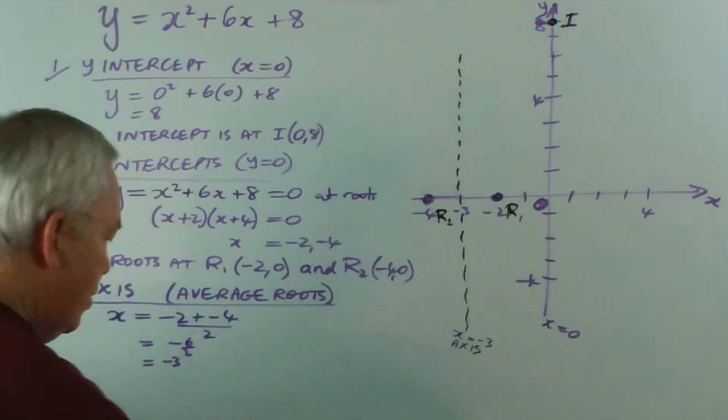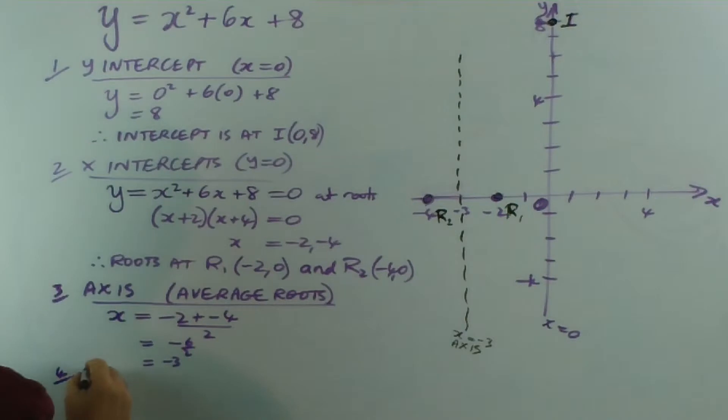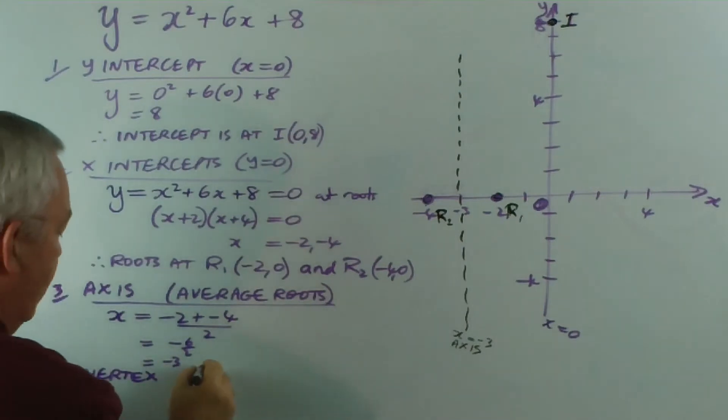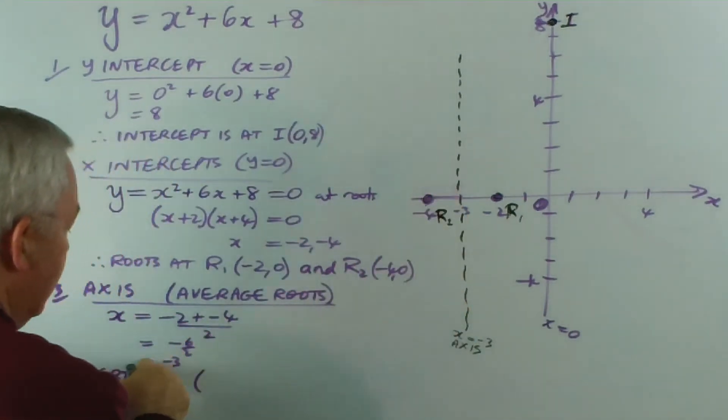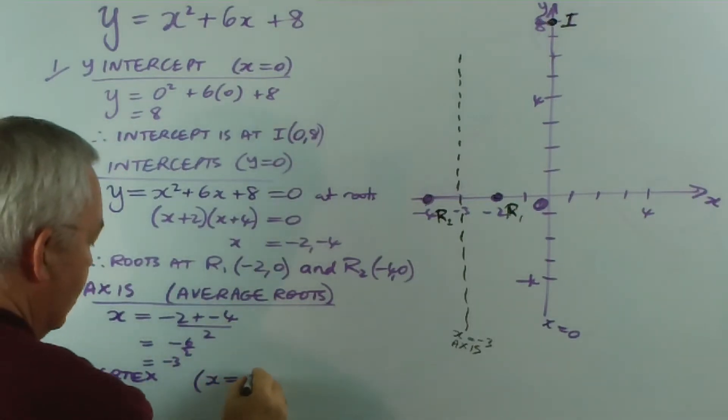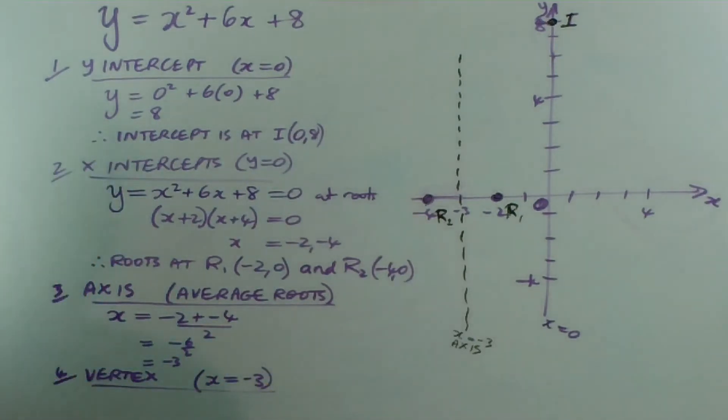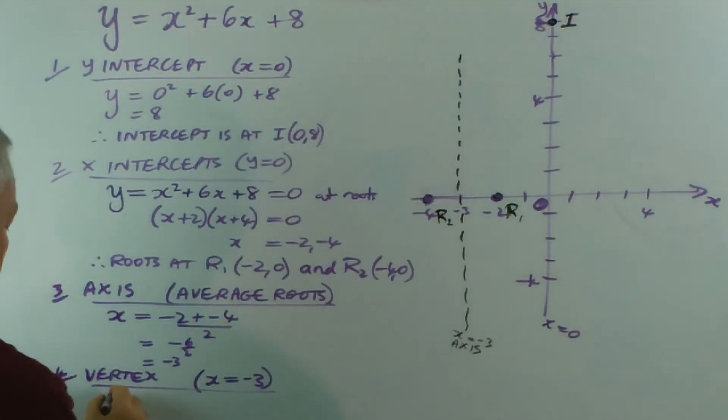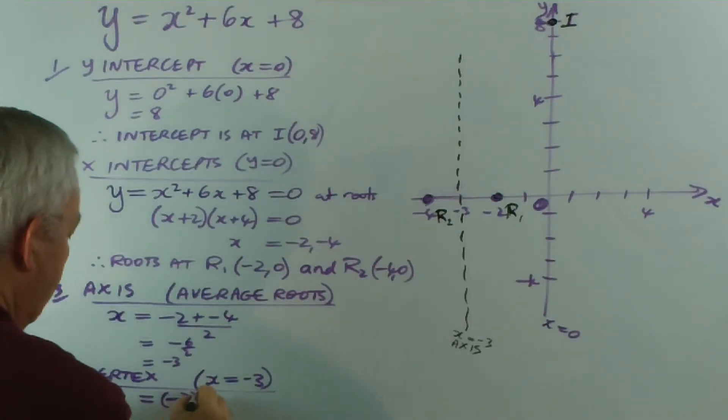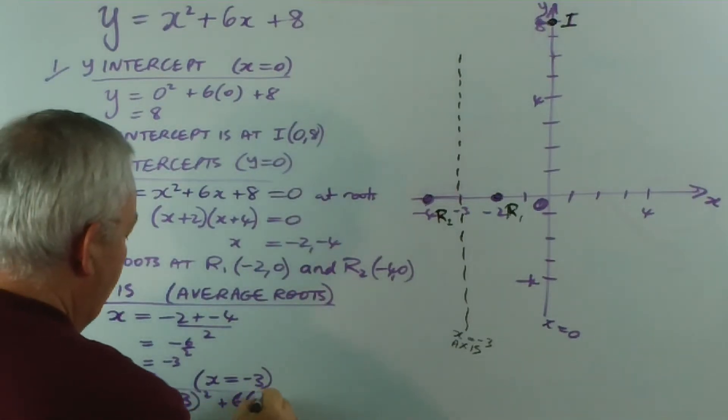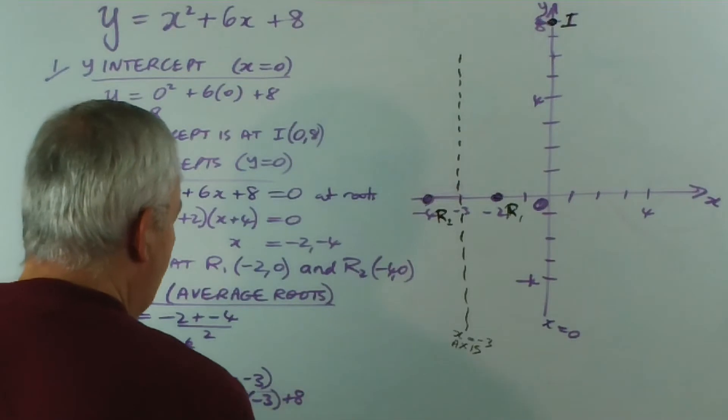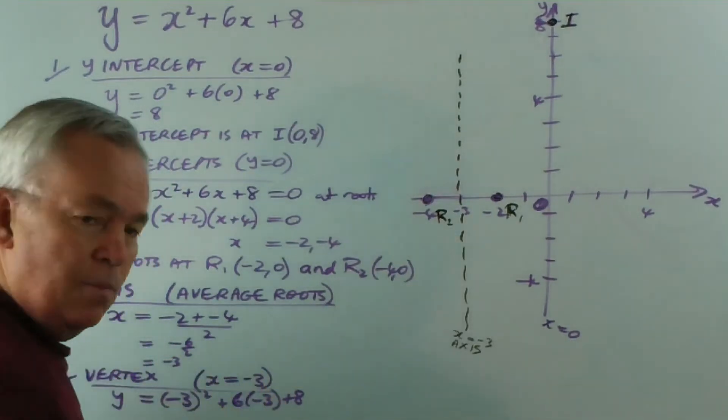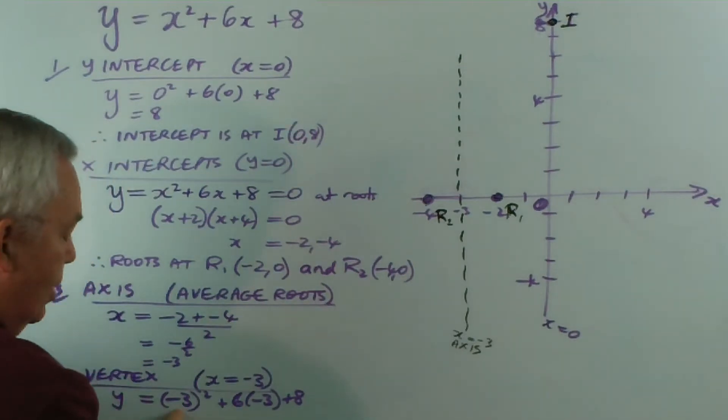And the last thing we need to do—and I think I might just have room on the board—is to find the vertex. And again, I explain my method for doing it. Because the vertex lies on the axis, I use this information that x is minus three, and I substitute it into the quadratic equation to find the y-value. So y equals minus three squared plus six lots of minus three plus eight. Now, I realize I'm basically running out of room here. This is nine, and minus 18 is minus nine plus eight is minus one.